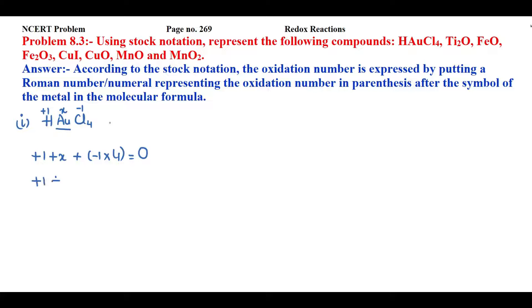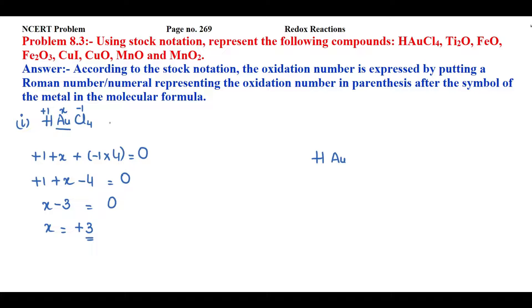The overall charge of the compound is 0, so: 1 + x + (−1 × 4) = 0, which gives 1 + x − 4 = 0, so −3 + x = 0, therefore x = +3. The oxidation state of gold is +3. In stock notation, this is written as H·Au(III)·Cl₄, where the Roman numeral III is placed in parenthesis after the symbol Au.